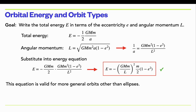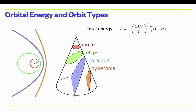Just to review, remember that conic sections — if you have a cone and take a plane, a conic section is the intersection of the plane with the cone. If the plane is perpendicular to the axis of symmetry of the cone, you get a circle. If you tilt the plane a little bit, you'll get an ellipse. If you tilt it a bit more so the plane is parallel to the side of the cone, you get a parabola, and if you tilt it even more, you get a hyperbola.